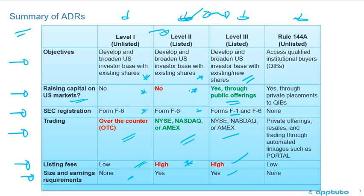Level 2 does not raise new capital; Level 3 does. Rule 144A, which is unlisted, is used to access qualified institutional buyers through private placements. There is no SEC registration, and trading is through private offerings, resales, or an automated portal. Listing fees are low and there are no size and earnings requirements.